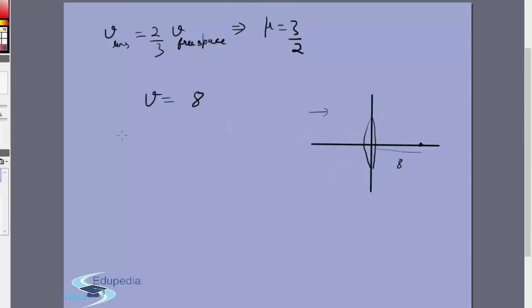We know that V is positive 8 because these are the directions of the incident rays, and it is 1/3 the size of the object. So from that we know that M is equal to -1/3 because it is also real. M is equal to -1/3, which basically gives us V/U is equal to -1/3, which gives me U is equal to -3V, which is -24.